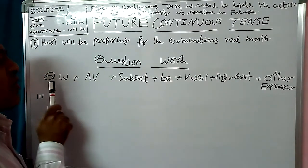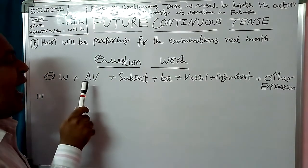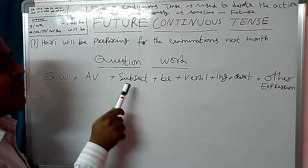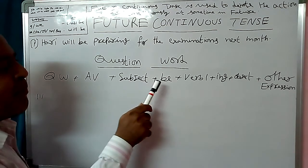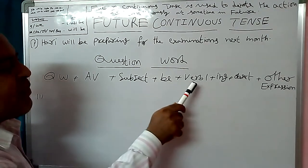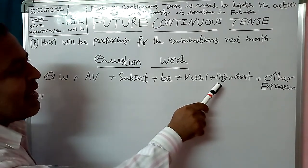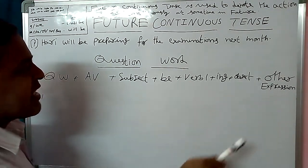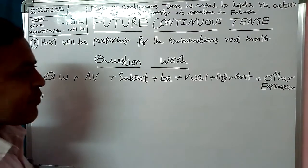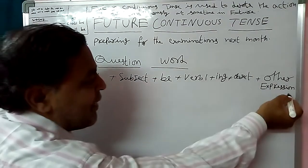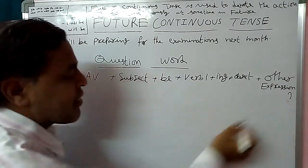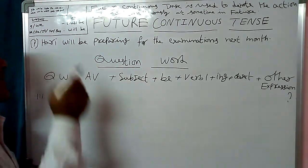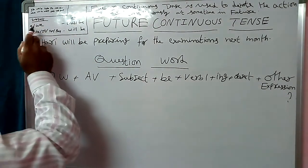The Question Word rule is: Question Word, Auxiliary (Accelerator), Subject, Be, Verb 1 plus -ing, Object, Other Expression, and Question Mark.